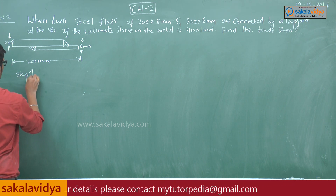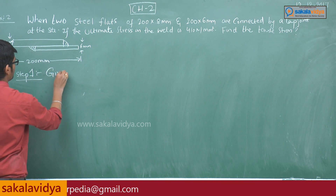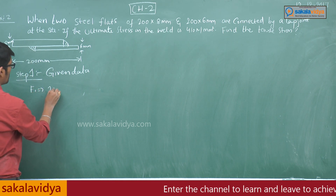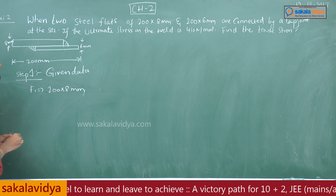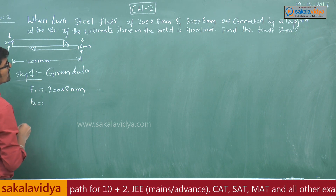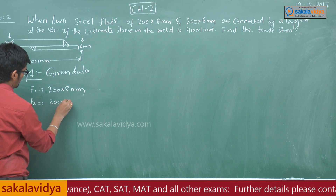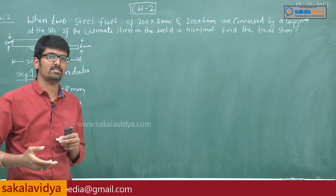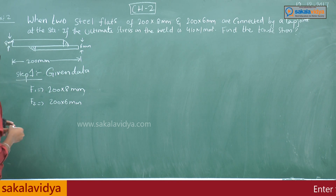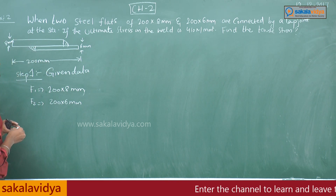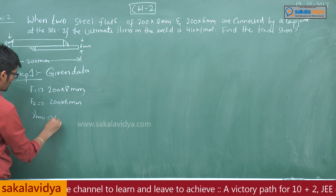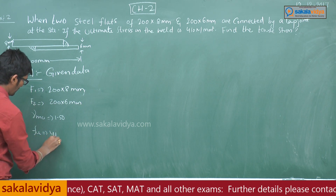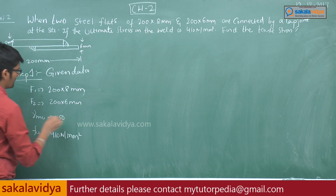Step 1 — Given data: Flat plate 1 is 200×8 mm. Flat plate 2 is 200×6 mm. The weld is done on the side, so the partial safety factor is taken as 1.50. The ultimate shear stress in the weld, fu, is equal to 410 Newton per mm square. Step 1 is completed.